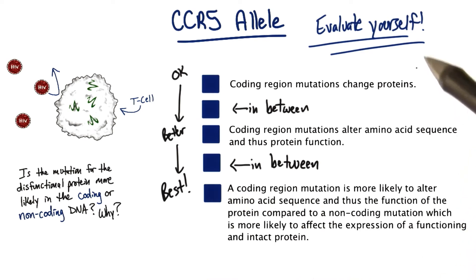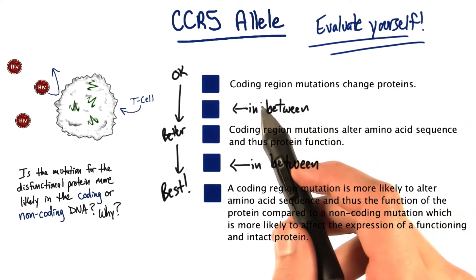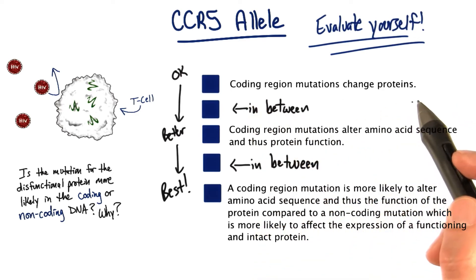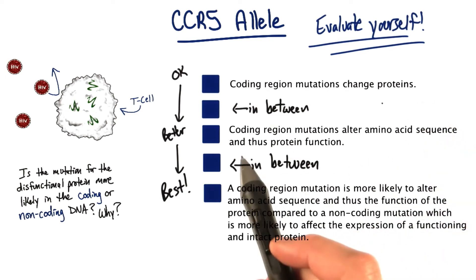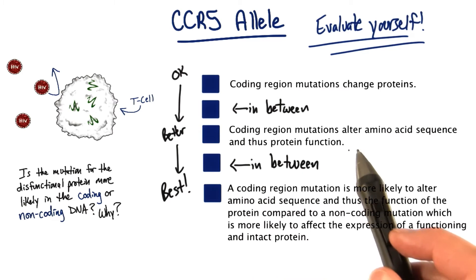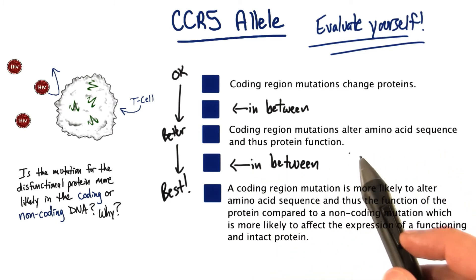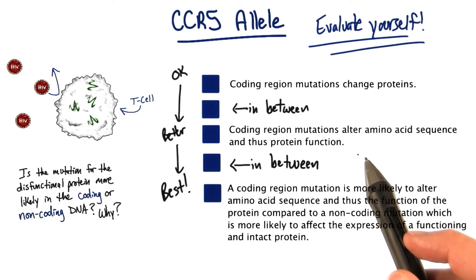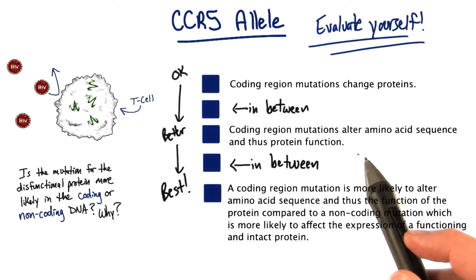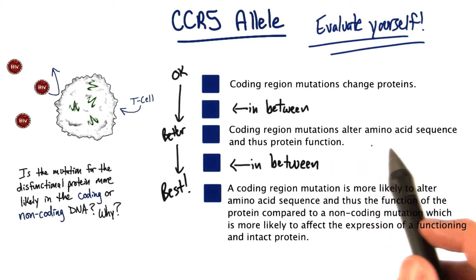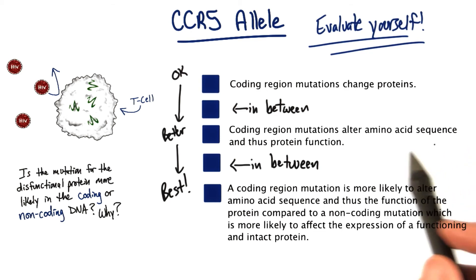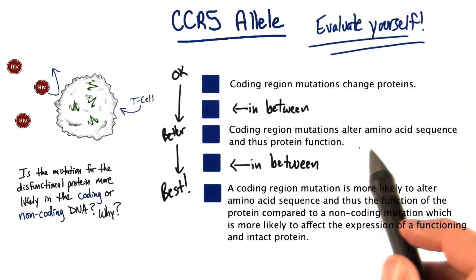I'm going to read these and I want you to evaluate your own answer against these possible answers. An okay answer would have been that the coding region mutations change proteins. A better answer would have said that coding region mutations alter amino acid sequence and thus protein function — that gives some idea that you understand the full impact of the mutation, but it doesn't really juxtapose what a coding region mutation does versus why a non-coding mutation wouldn't better describe this.